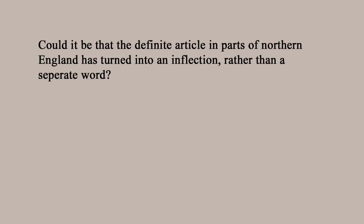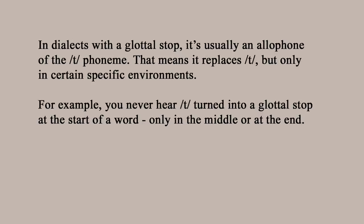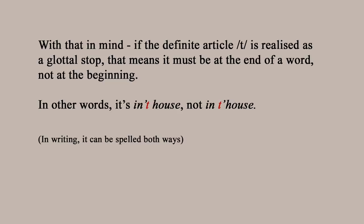From a phonological perspective, in dialects that have it, the glottal stop is an allophone of the T phoneme — in certain phonological environments you pronounce the phoneme as T, but in other environments as a glottal stop. Among other things, it's realized as T at the start of a word and a glottal stop at the end of a word. So if I say 'in house,' I'm pronouncing it as a glottal stop, which means it must be at the end of the word 'in,' not at the start of the word 'house.'